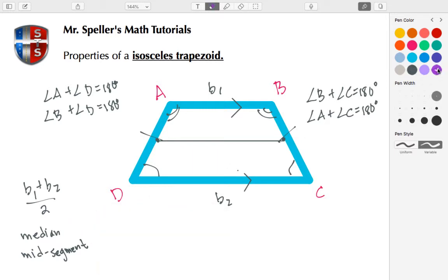All right, and the last thing I want to talk about here are the diagonals. So if we have a diagonal going here from angle D to angle B and another diagonal from angle A to angle C, those diagonals are congruent. So here we can write this as AC is congruent to BD.